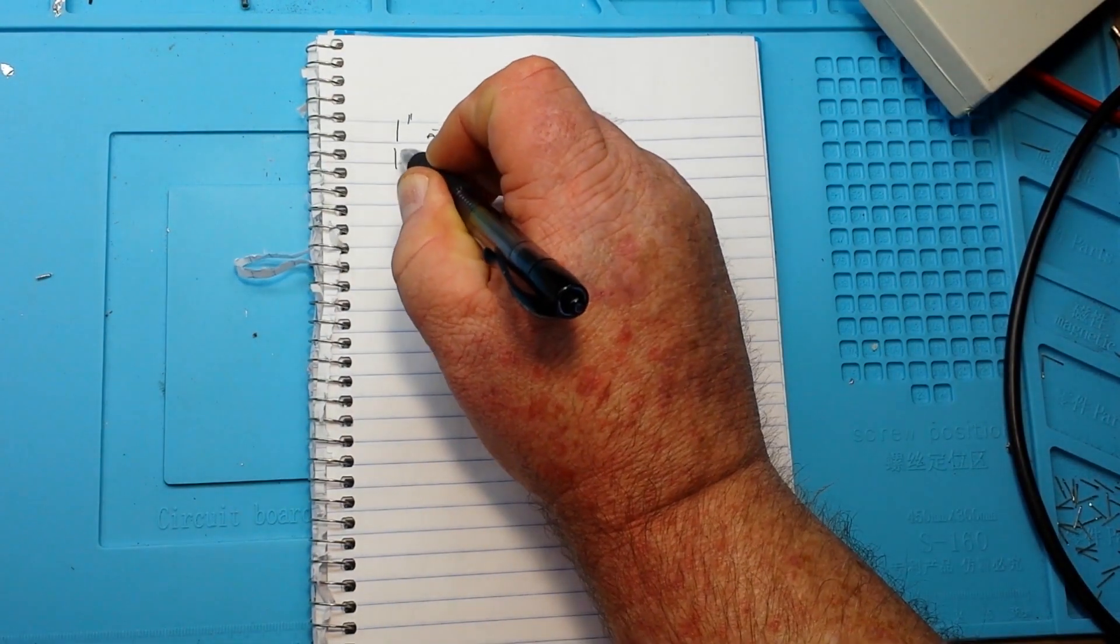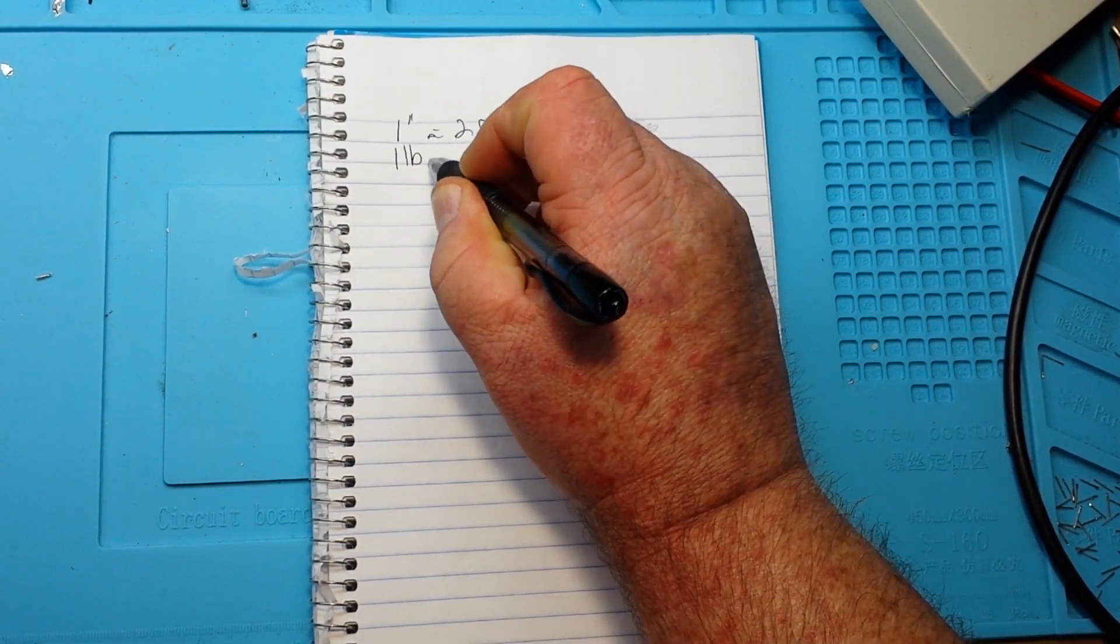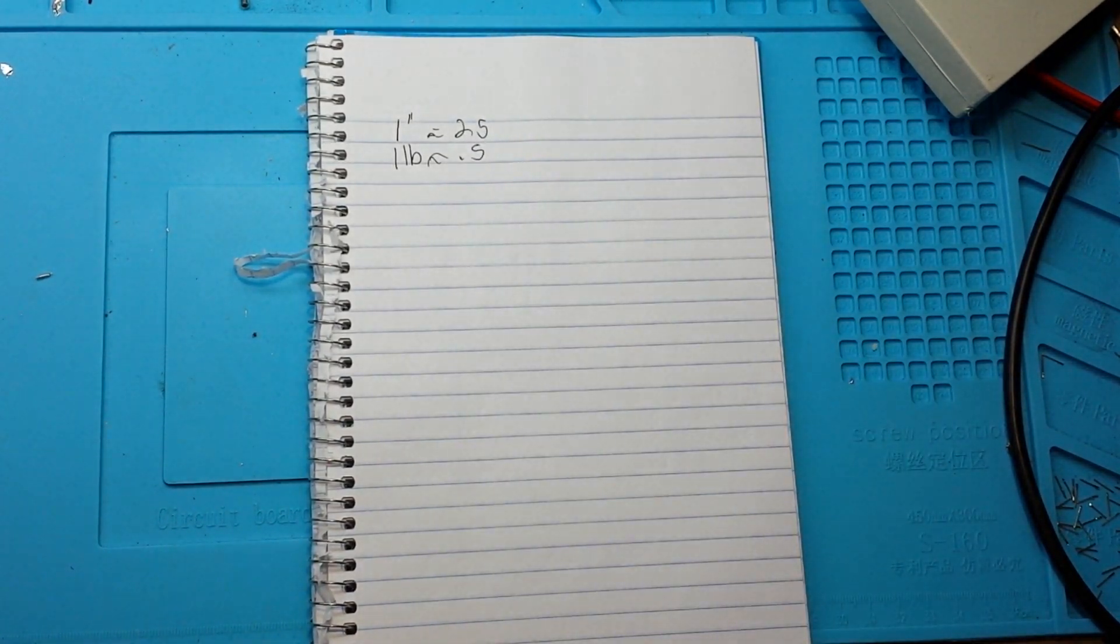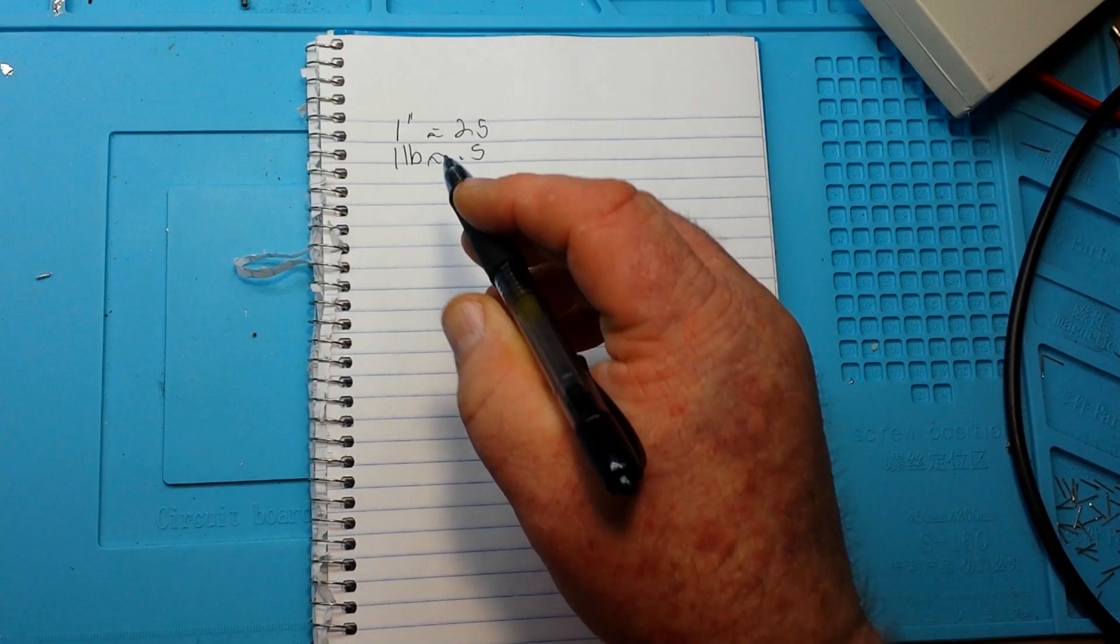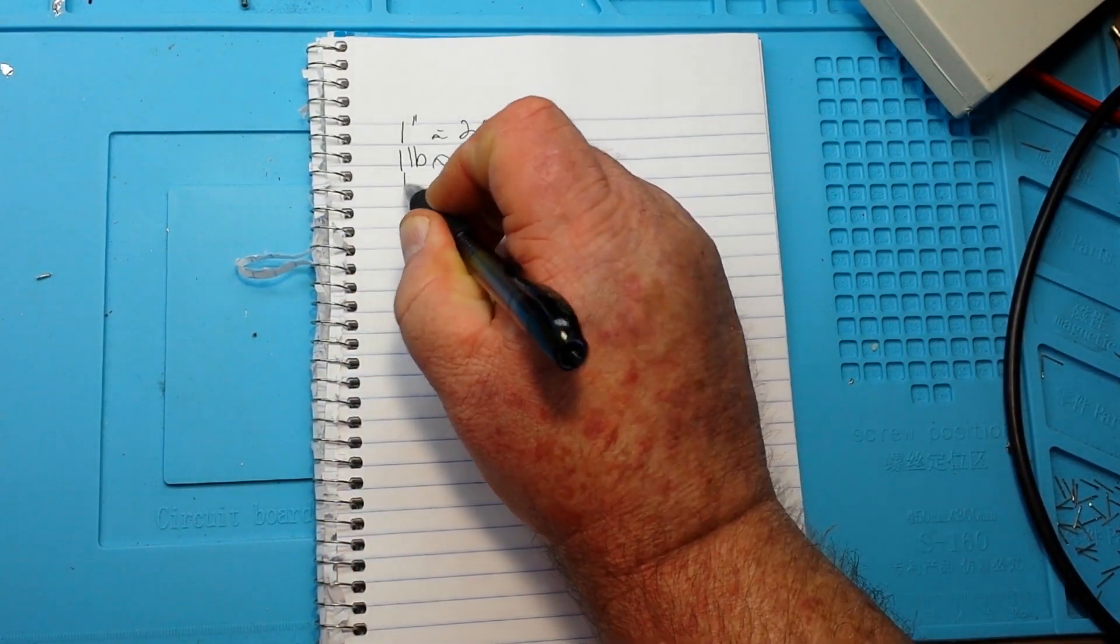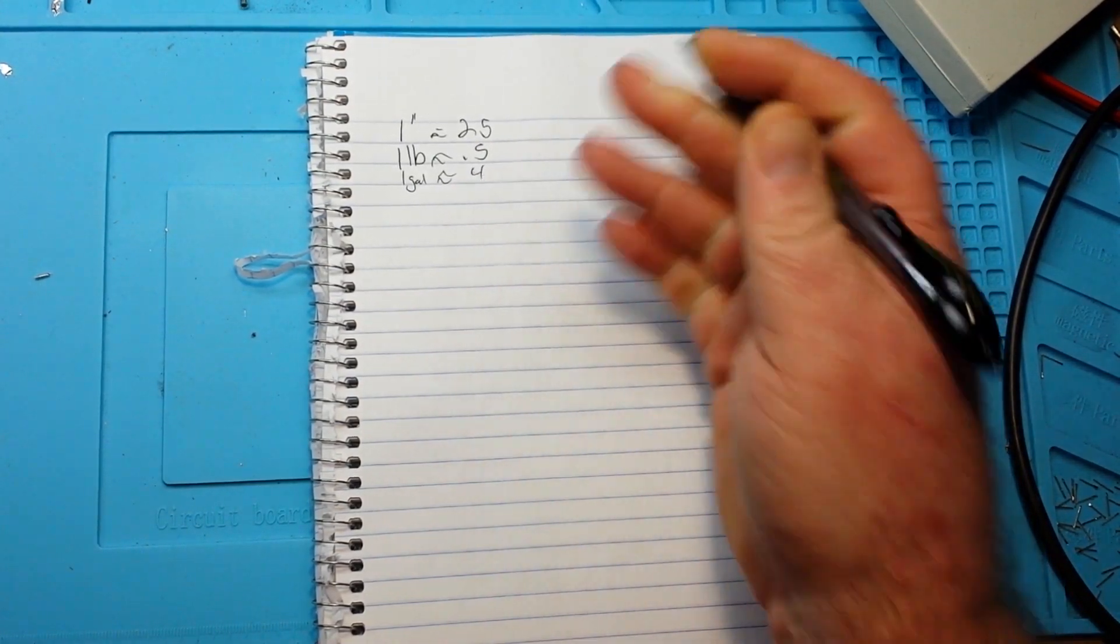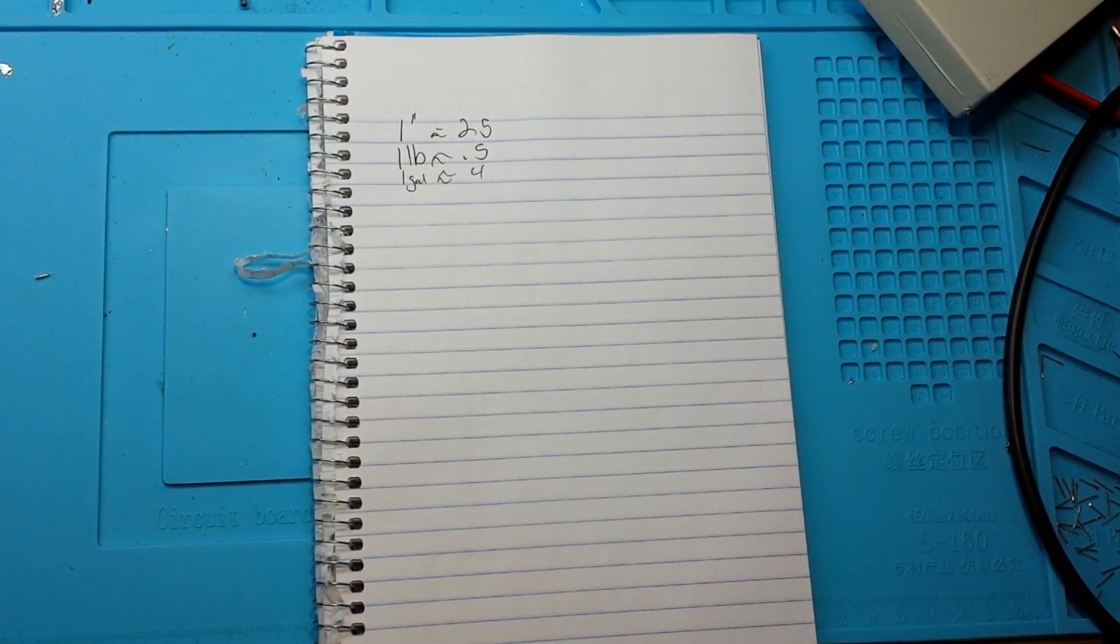And I know that one pound is roughly a half a kilogram, and one gallon is what, about four liters, something around there.